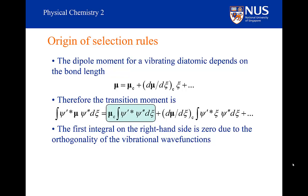The first term is zero. The mu e — the dipole moment at the equilibrium position — is of course the permanent dipole moment of the molecule. It could be zero, it could be non-zero, but it doesn't make any difference. This is because this integral is zero. Vibrational wave functions that are solutions to the harmonic oscillator Schrödinger equation are orthogonal to one another, and so integrals like these are always zero if there is a change in vibrational state.